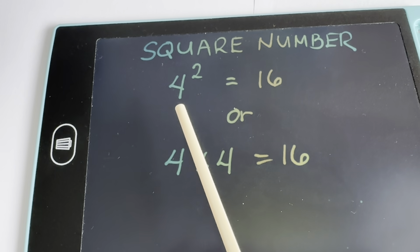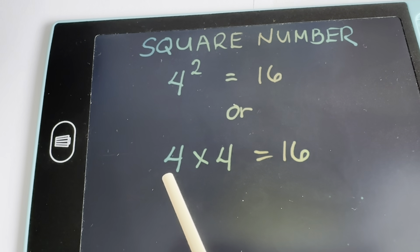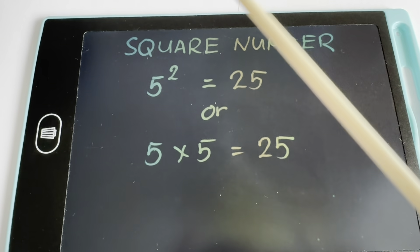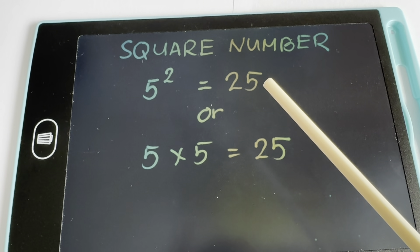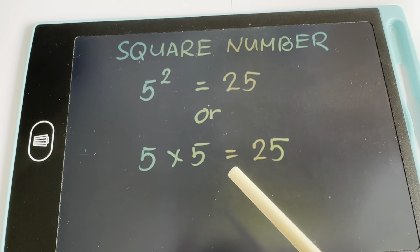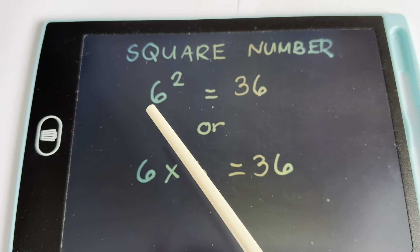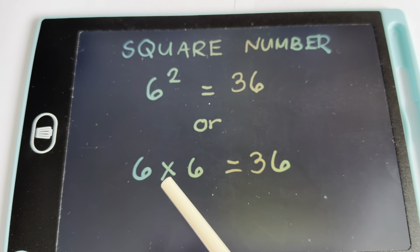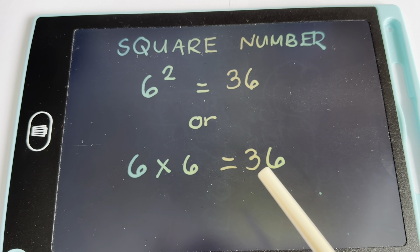4 squared is equals to 16, or 4 times 4 is equals to 16. 5 squared is equals to 25, or 5 multiplied by 5 is equals to 25. 6 squared is equals to 36, or 6 times 6 is equals to 36.